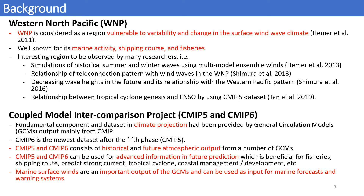In this kind of wind wave modeling and projection studies, they use external forcing — marine surface wind — mainly obtained from the Coupled Model Intercomparison Project, CMIP. CMIP-6 is the newest data after the fifth phase, CMIP-5. Both CMIP-5 and CMIP-6 consist of historical and future projection parts, and marine surface wind is one of the important outputs of the CMIP GCMs, used as external forcing in marine forecast and wind wave modeling.